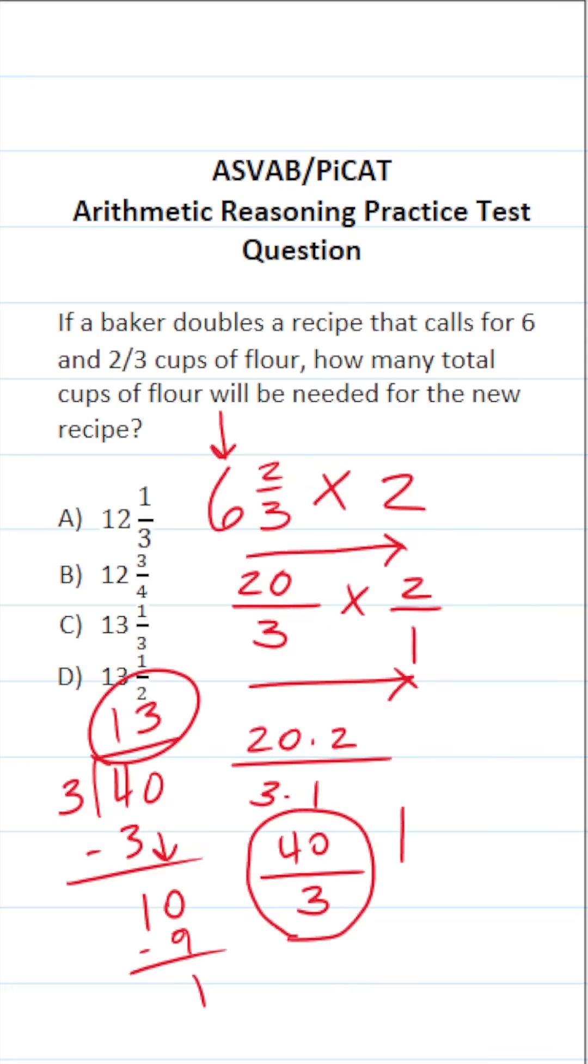This 13 is going to be our whole number. This remainder of one is going to be our numerator. And this three is going to be our denominator. So if they double the recipe that called for six and two thirds cups of flour, they're now going to need 13 and one third cups of flour. So the answer to this one is C.